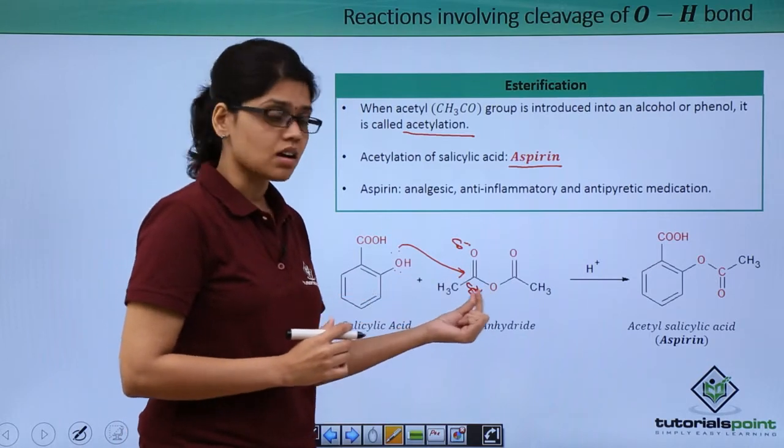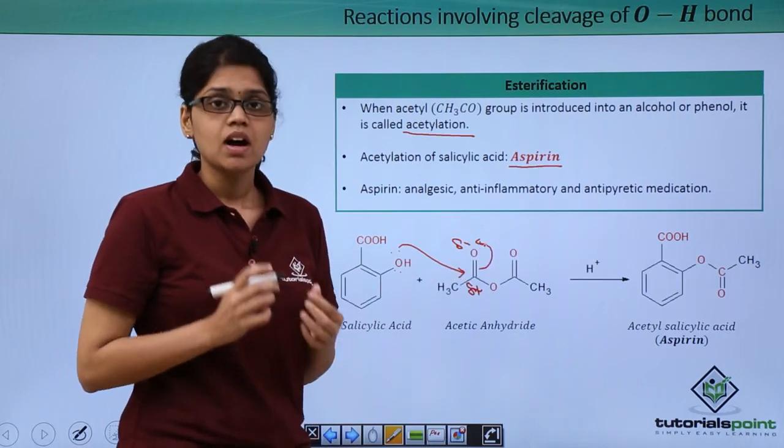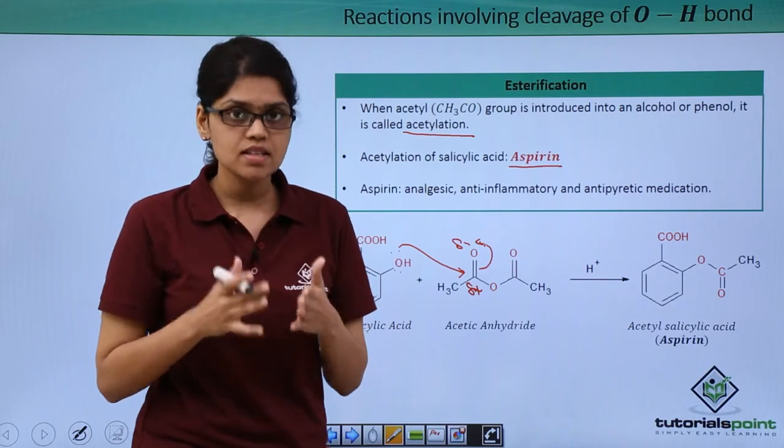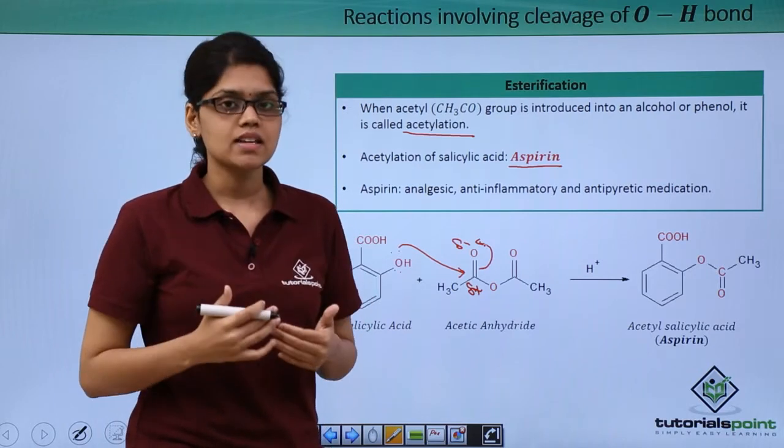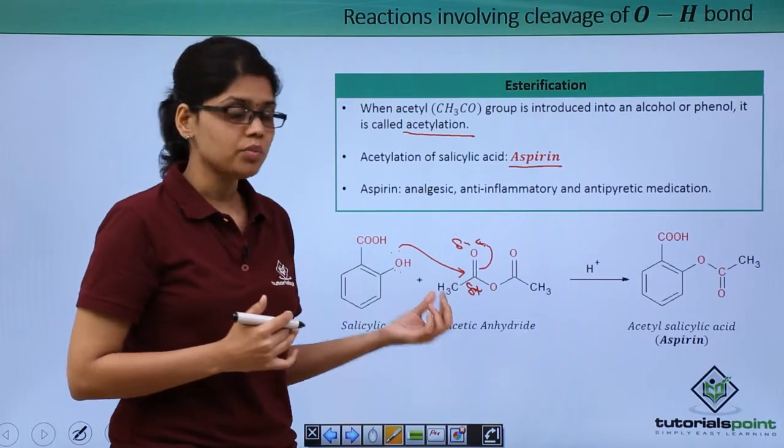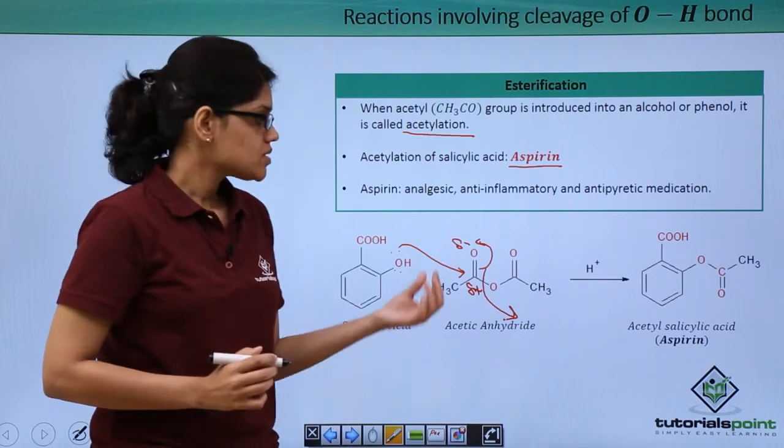However, we also know that C double bond O is much stronger than C single bond O, and this essentially favors the restoration of the C double bond O group, and elimination of this group takes place, which is CH3CO-.